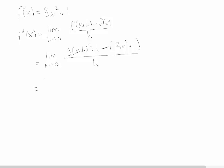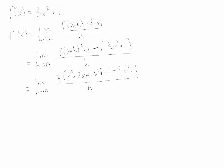Now I can simplify. If I expand this part squared, I get something like this. And I see this 3x squared is going to cancel with this 3x squared. And this plus 1 is going to cancel with this minus 1.